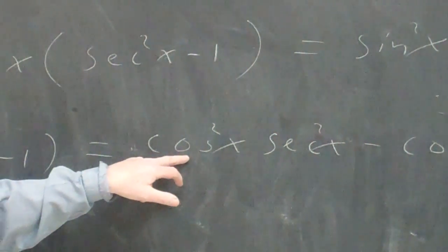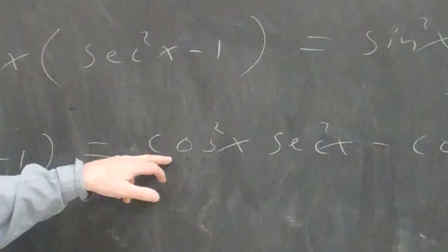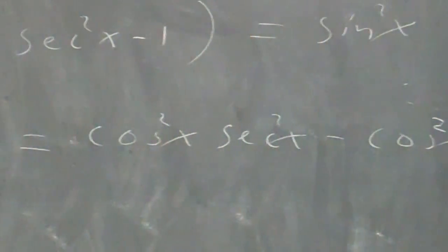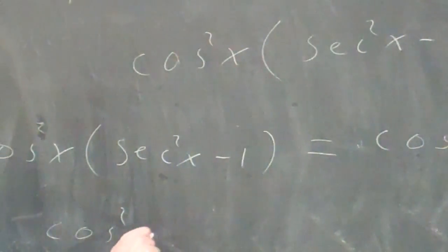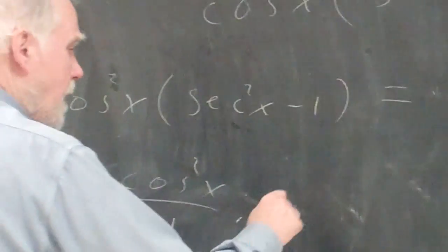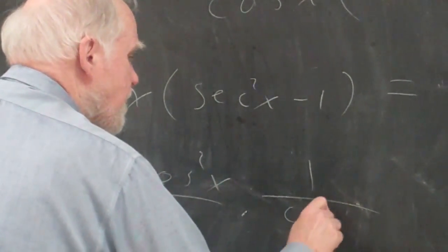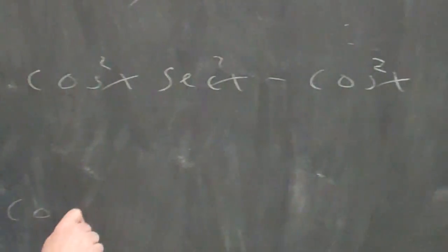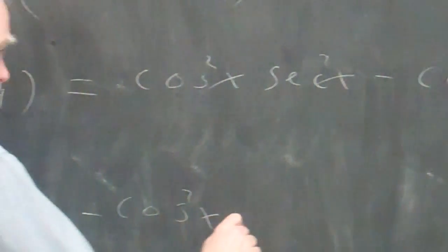But I'm going to keep moving this way. And I figure, maybe I'll change everything to sines and cosines, because I'm trying to get the sine, right? So I'm trying to get there. So I think I'll change this to cosine squared x over 1 times 1 over cosine squared x, minus cosine squared x, and hope that something good happens here.